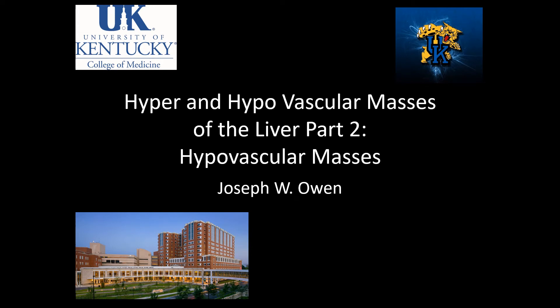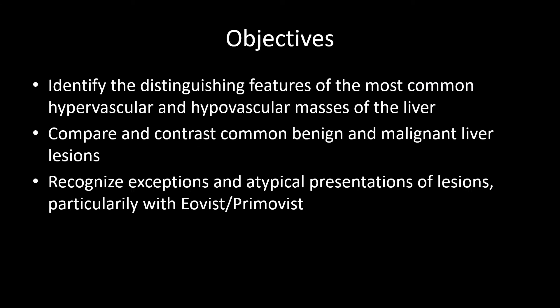Welcome to the second part of my screencast series on hyper and hypovascular masses of the liver. In this screencast we will cover hypovascular masses. By the end of this series you should be able to distinguish common hyper and hypovascular masses within the liver based on their imaging features, compare and contrast common benign and malignant masses, and recognize some exceptions in atypical presentations.